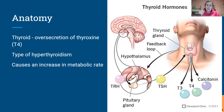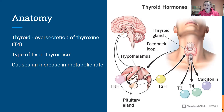Secondary is the next thing up the chain. The anterior pituitary gland secretes thyroid stimulating hormone, which tells the thyroid to produce thyroxine (T4), T3, and calcitonin. So if there's too much TSH being secreted and telling the thyroid to keep going, that would be secondary hyperthyroidism.